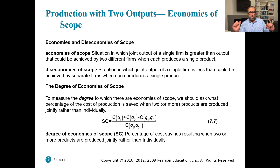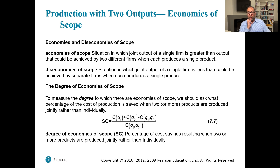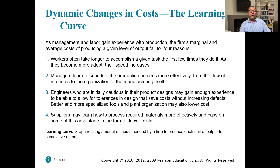To measure the degree of economies of scope, we ask what percentage of cost is saved when two or more products are produced jointly rather than individually. The formula is: [C(q1) + C(q2) − C(q1, q2)] / C(q1, q2), which gives us the percentage cost saving when using economies of scope. Diseconomies of scope occur when joint output is less than what separate firms could achieve.